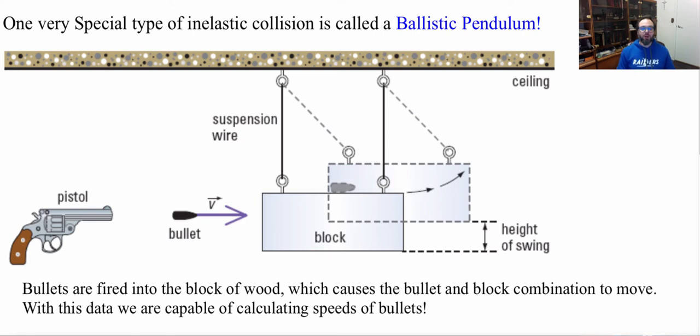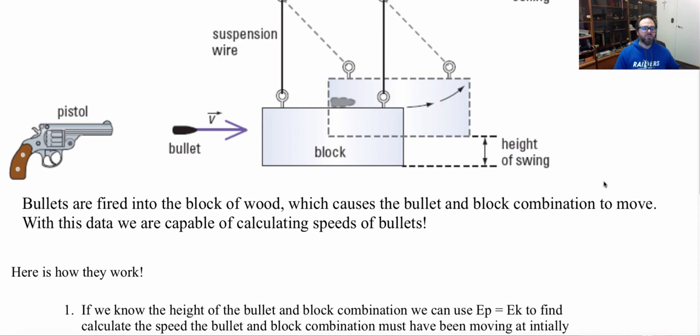So basically what happens here, bullets are fired into the block of wood, which causes the bullet and block combination to move. With this data, we are capable of calculating the speeds of the bullets. So how does this work? We're going to be looking at two types of energy here.